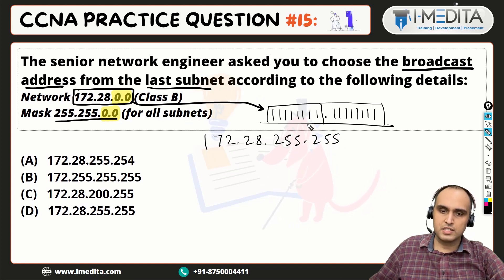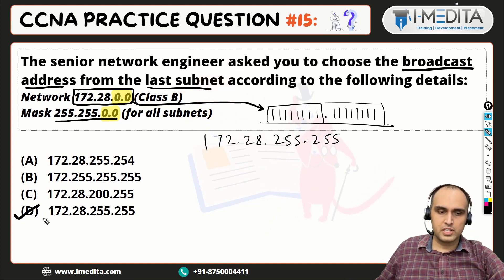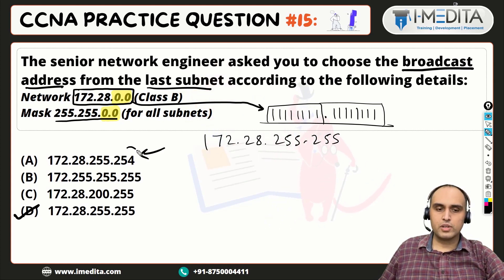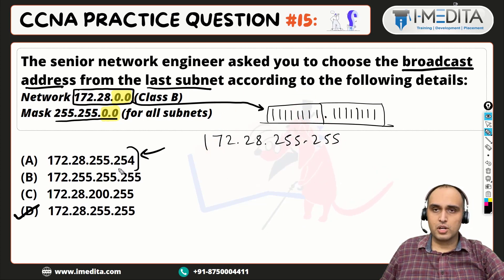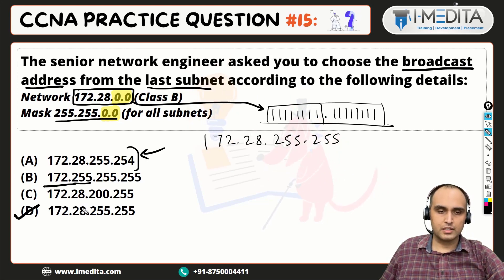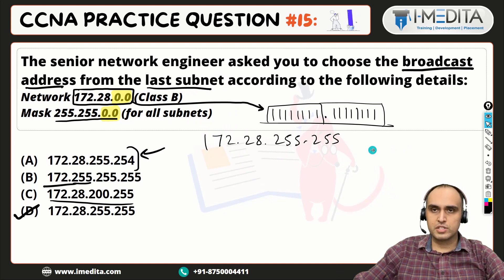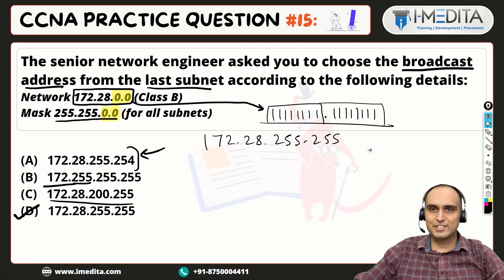Converting to binary confirms the answer. Looking at the options, Option D is the right answer. The other options are incorrect: one is the last valid IP address, not the broadcast address; another goes to a different range; and one is a host-assignable address. I hope you understand how to solve this question and the reasoning behind it. Thanks for watching, see you in the next video.